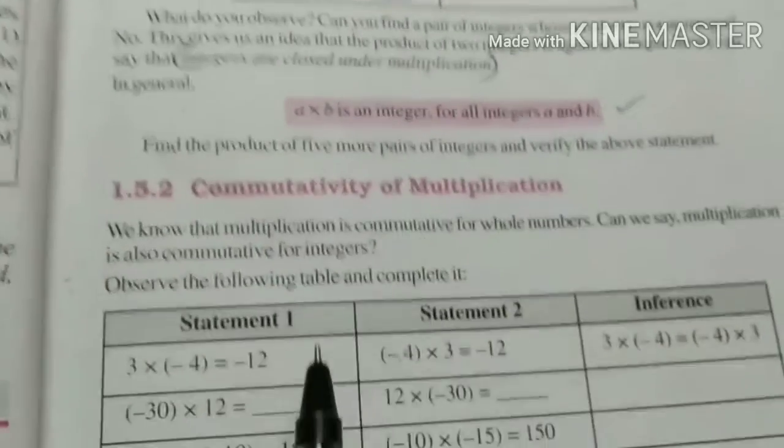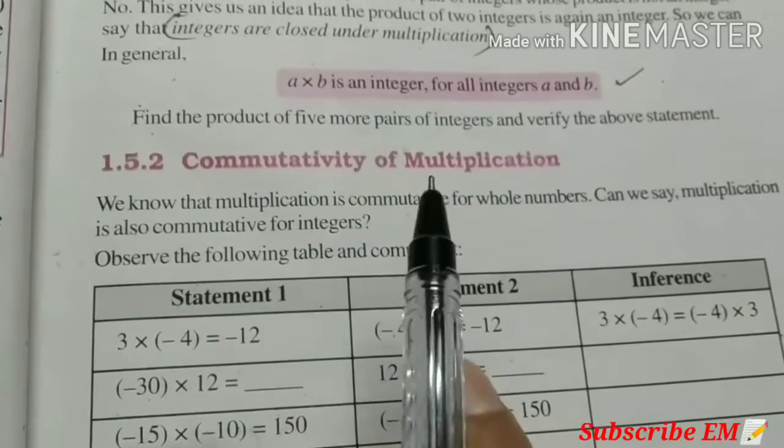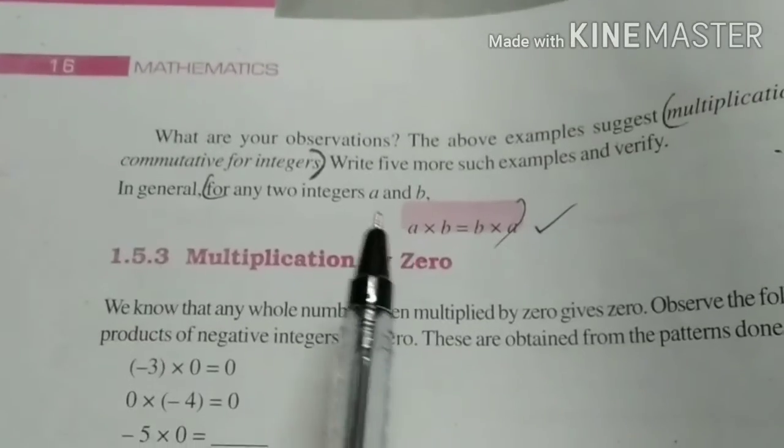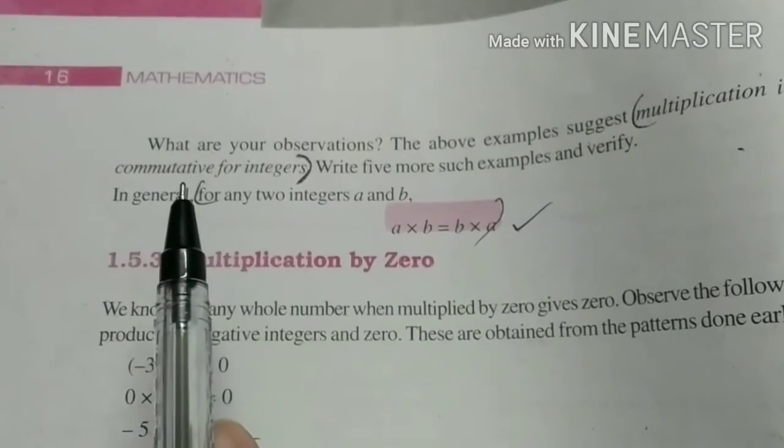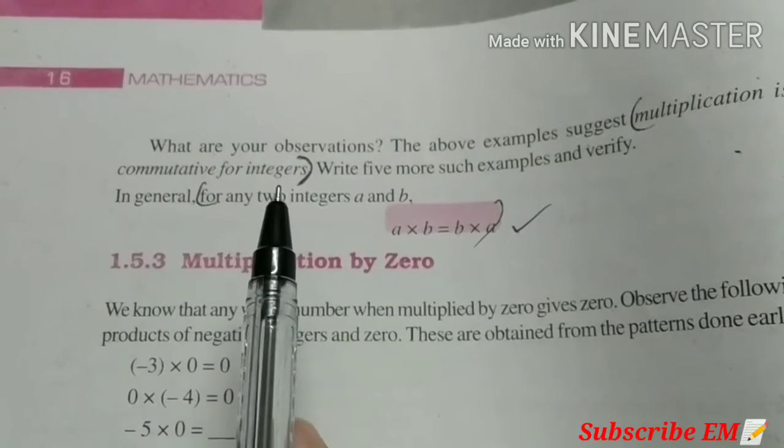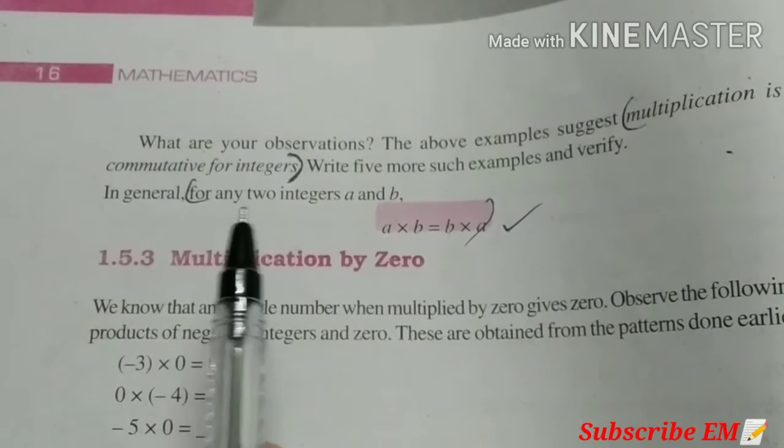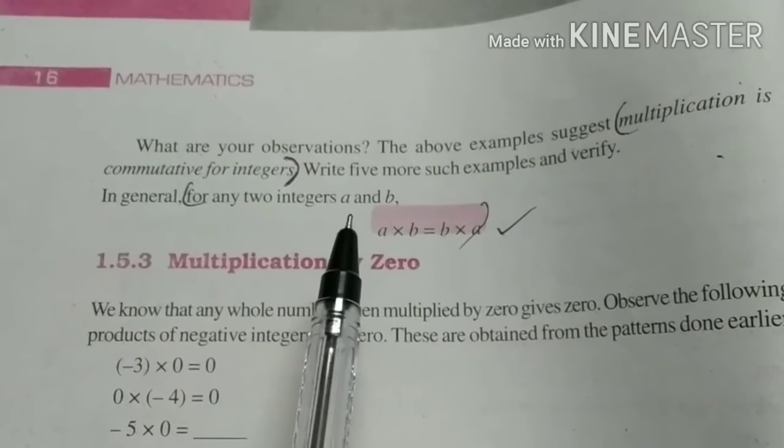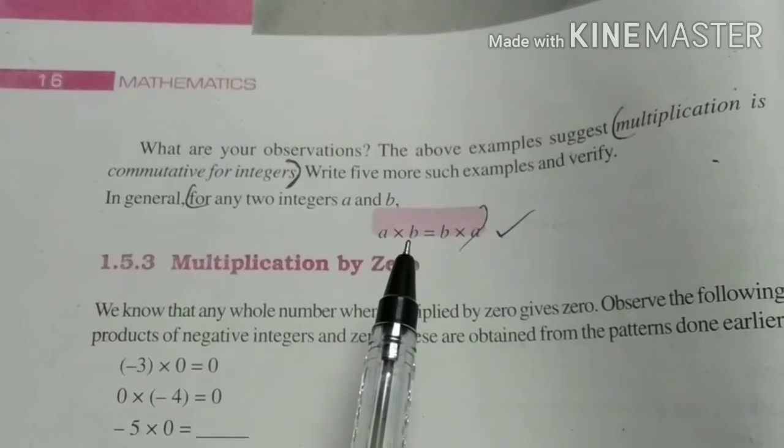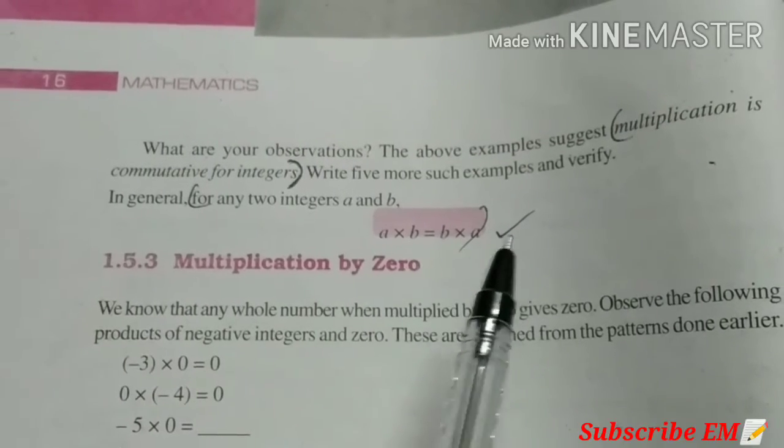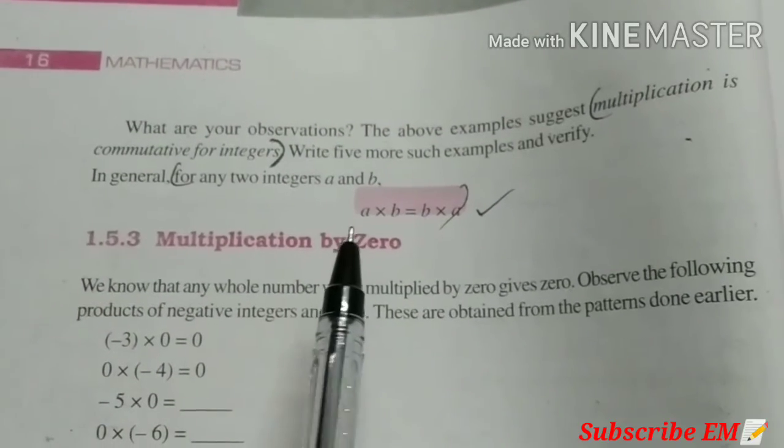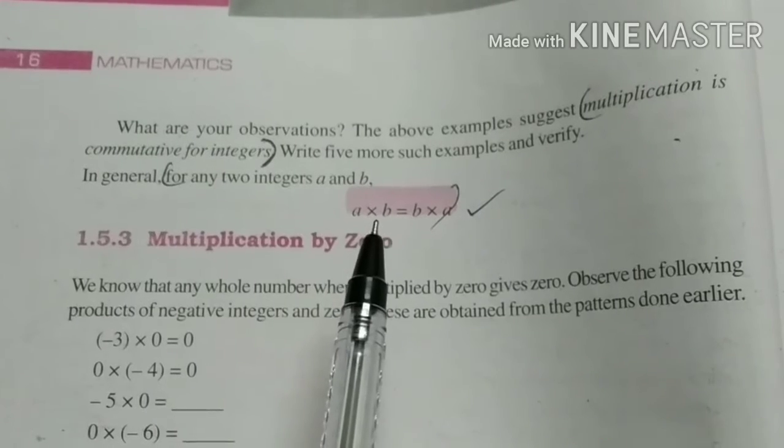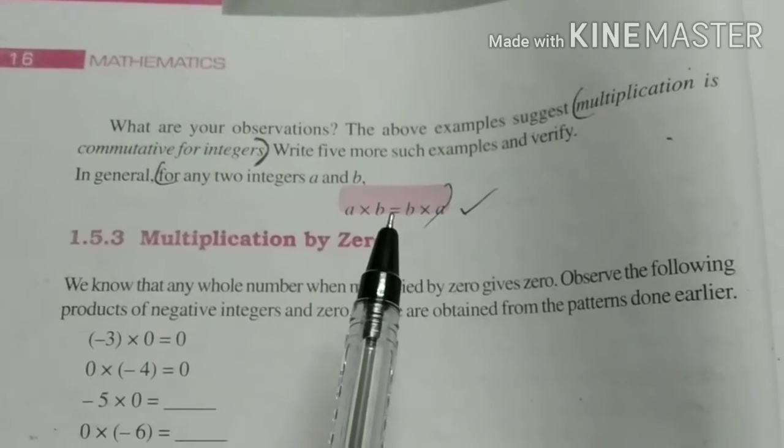Second property is commutativity of multiplication. Multiplication is commutative for integers. For any two integers A and B, A into B is equal to B into A. That is, if we change the order, we get same equal answer.